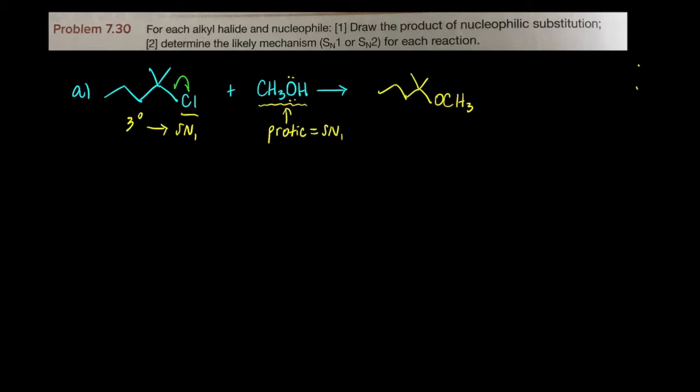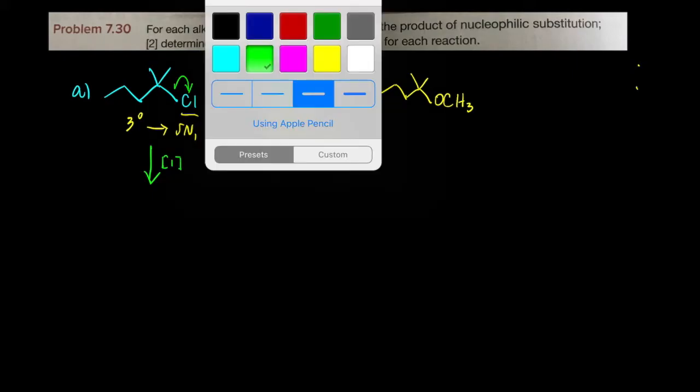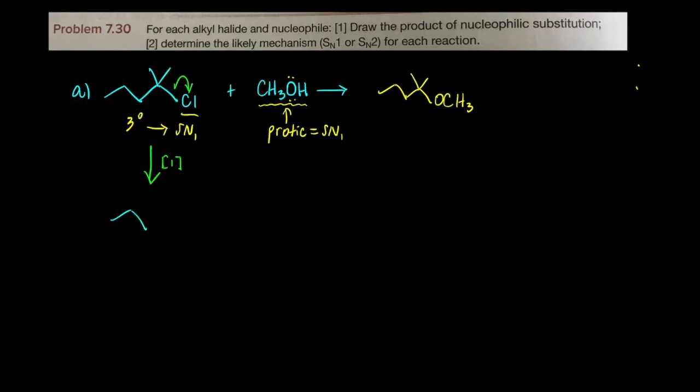In the first step we would have a chloride departing, so that's step one, and we have a carbocation intermediate. Here's our carbon with our two methyl groups there, and there's a positive charge, and we have chloride floating out and around.